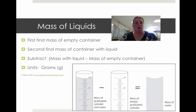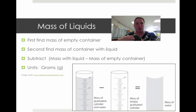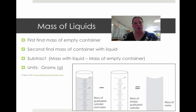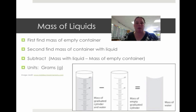Now when you go to find the mass of liquids, you have to first find the mass of the empty container, because you can't just take a liquid and stick it on here — it'll spill everywhere. You need to have a container. So you take the mass of the empty container, then you take the mass of the container with the liquid, and you subtract those. That's how you find out the mass of your liquid.